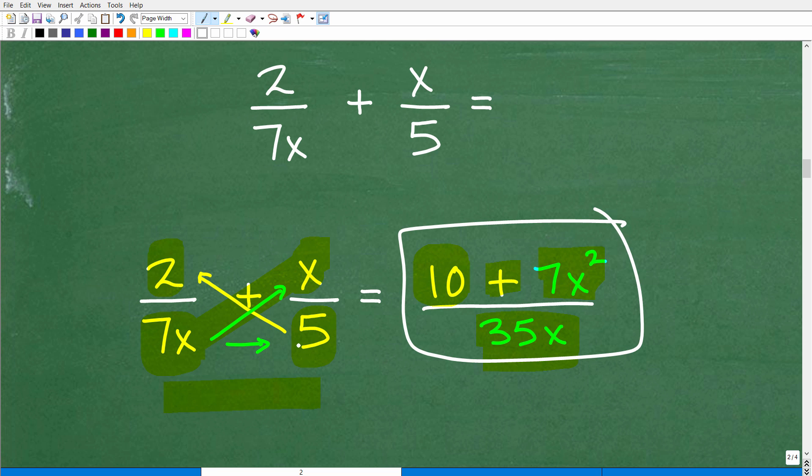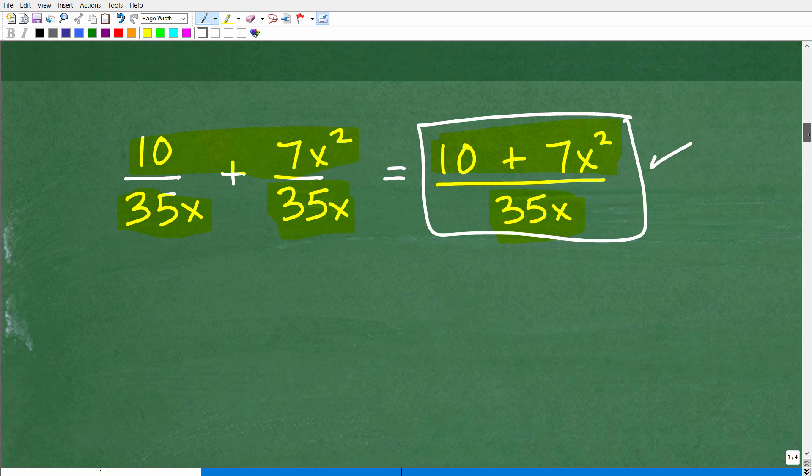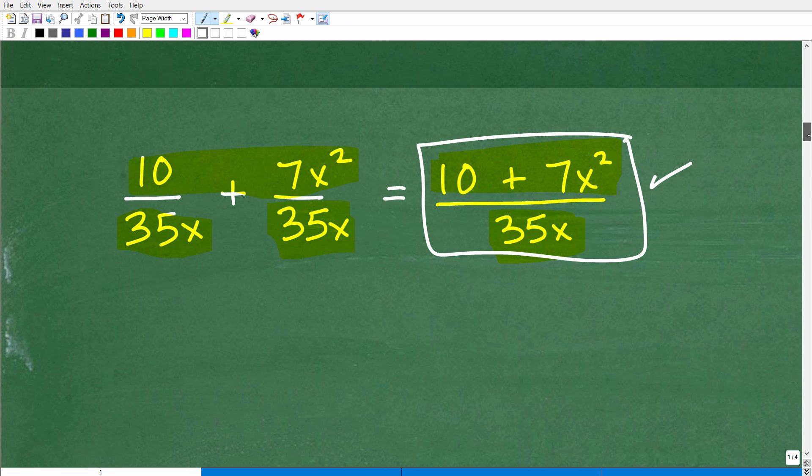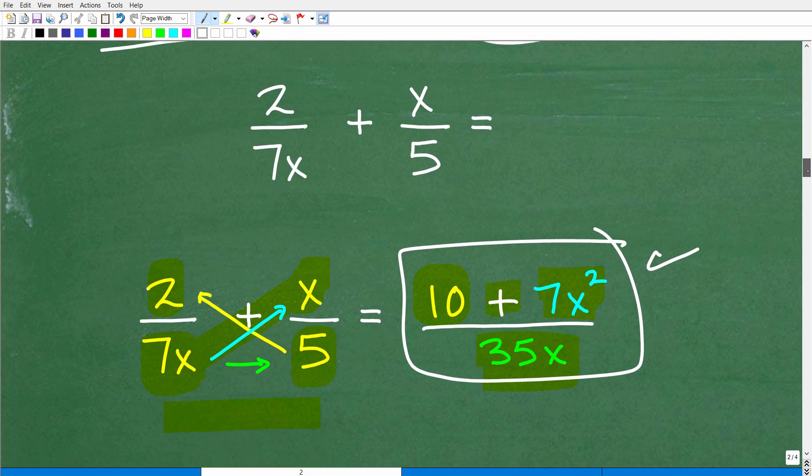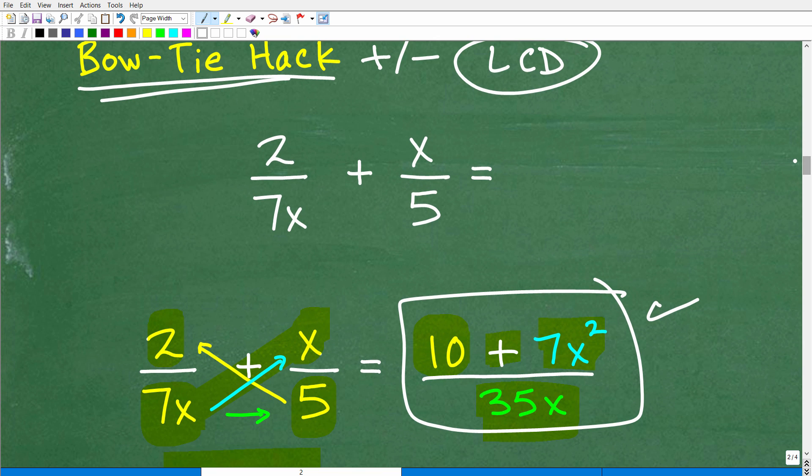Take a look at that. I literally just went this times this, this times this, and just wrote it right there. And this is, in fact, the same as this answer. Look at that. 10 plus 7x squared over 35x. And over here, we have 10 plus 7x squared over 35x. And some of you might be like, just in shock. You might be like, wow, why didn't I know this earlier? It would have saved me so much work.